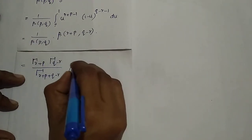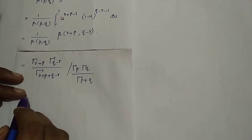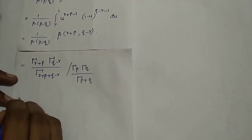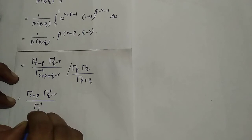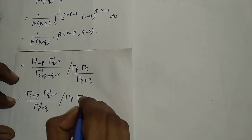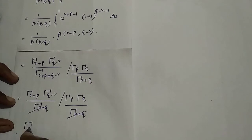Expressing in terms of gamma functions: β(r+p, q-r) = Γ(r+p)·Γ(q-r)/Γ(p+q), and β(p,q) = Γ(p)·Γ(q)/Γ(p+q). Therefore, μ'r = Γ(r+p)·Γ(q-r) / [Γ(p)·Γ(q)]. This is the rth raw moment of the beta distribution of the second kind.